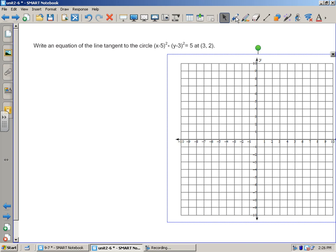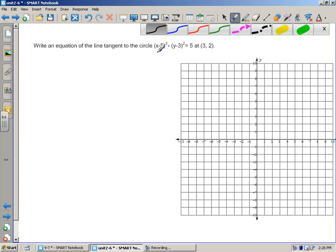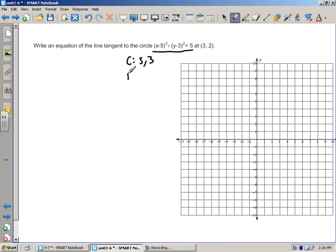We're given this equation right here so we know that our center of our circle is at (5,3) and our radius is the square root of 5, and we have some point on the circle at (3,2).